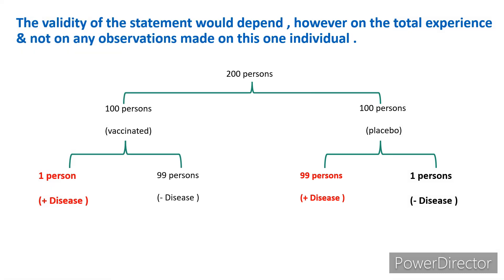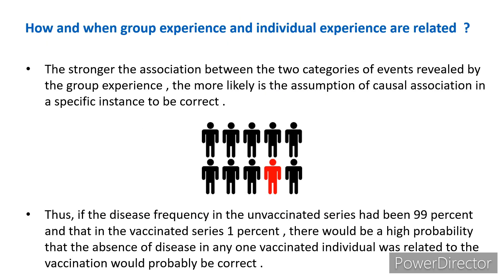For example, imagine out of 100 vaccinated persons, only 1 developed disease and 99 are free. And in the control group, among 100 persons who took placebo, 99% developed disease. If the disease frequency in the unvaccinated series were 99% and in the vaccinated series 1%, there would be a high probability that the absence of disease in one vaccinated individual was related to the vaccination — and we can infer this group experience to the individual patient.